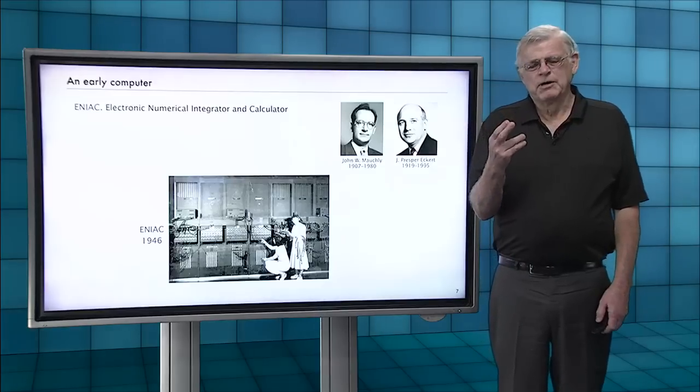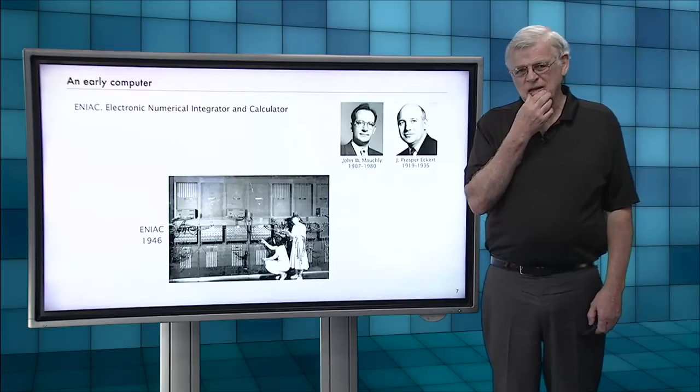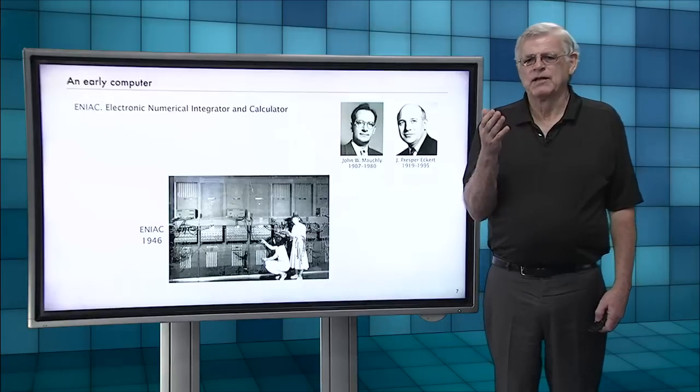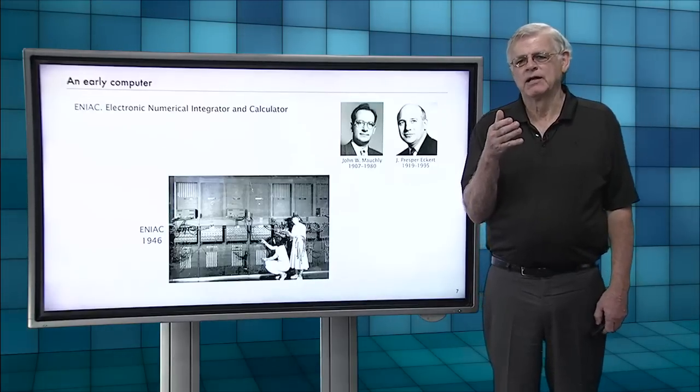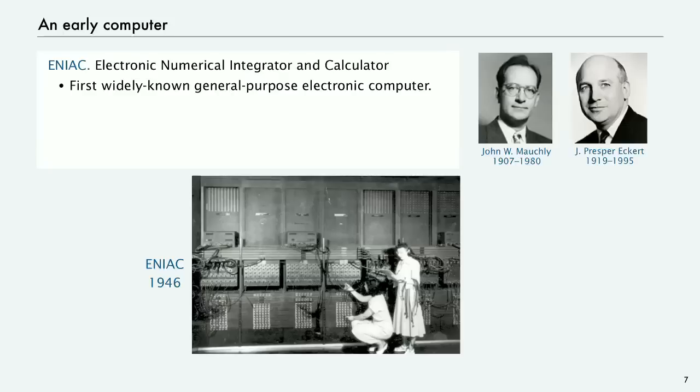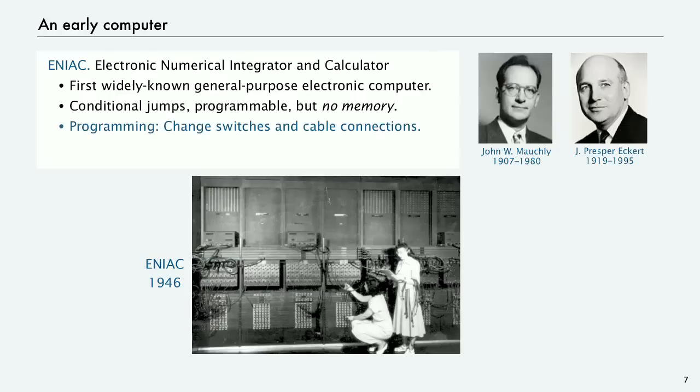Now, let's talk a little bit about some historical context. A very early computer was called the ENIAC, was being developed by Mauckley and Eckert. It's often given the distinction of being the first widely known general purpose electronic computer. There's a lot of debate about this and you can read about other candidates as well. It had conditional jumps. It was programmable, but it didn't have memory.